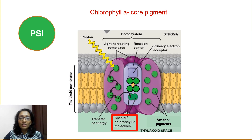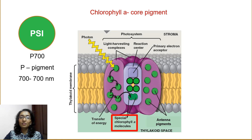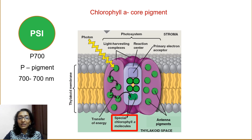In PS1, a special pair of chlorophyll A molecules is present and it is called P700. Here, P stands for pigment and 700 means 700 nanometers. This is the wavelength of light that this special pair of chlorophyll A molecules in PS1 absorbs most strongly. Just keep in mind that 700 nanometers is the wavelength of red light.